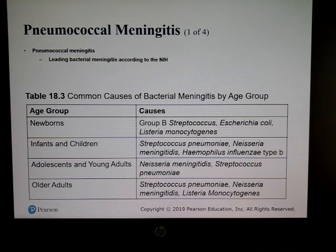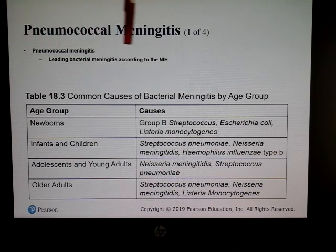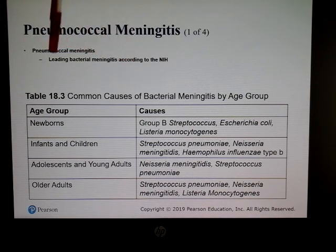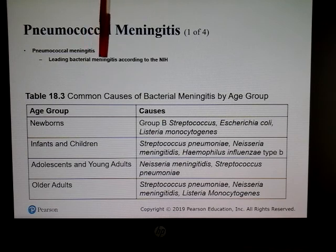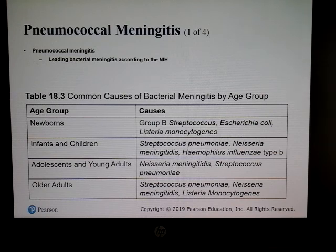Pneumococcal meningitis is the leading cause of bacterial meningitis according to the NIH. A table in the slides shows different age groups and the bacterial types that most commonly cause meningitis in each group.